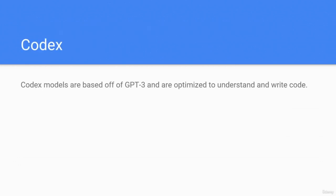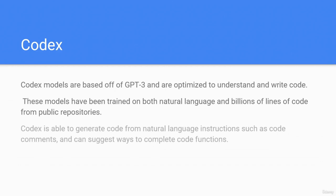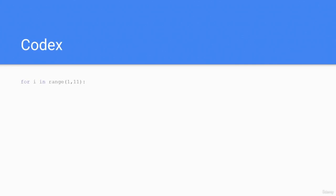Codex models are based on GPT-3 and are optimized to understand and write code. These models have been trained on both natural language and billions of lines of code from public repositories. Codex is able to generate code from natural language instructions such as code comments and can suggest ways to complete code functions. For example, given the prompt 'write a for loop counting from 1 to 10 in Python,' the answer provided would be: for i in range(1, 11): print(i).